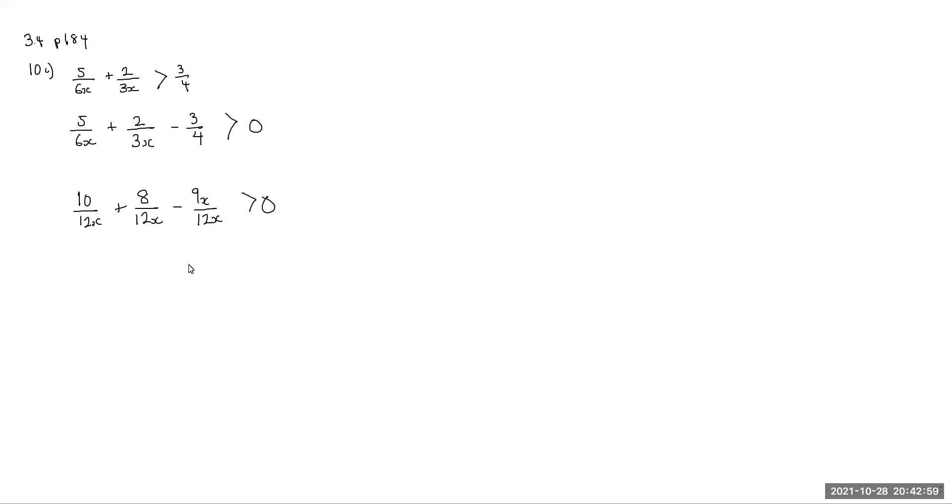And all of that is greater than 0. So if I were to simplify, I get myself a negative 9x plus 18 over 12x is greater than 0. And that's it.